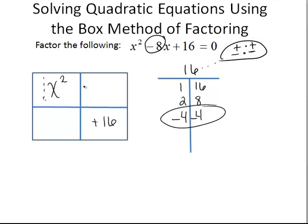We're going to take this, and we're going to write it in the remaining boxes, adding x to each. So now we have x squared and minus 4x here, and minus 4x plus 16.